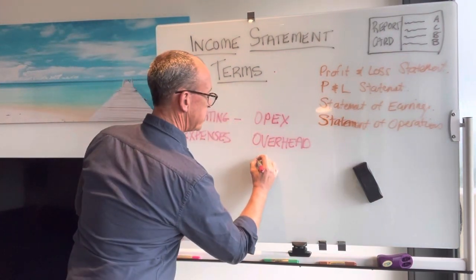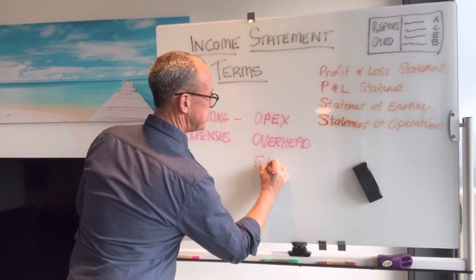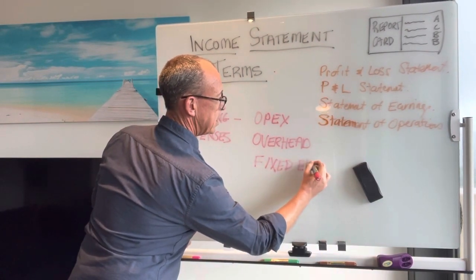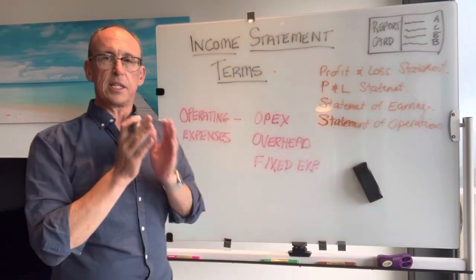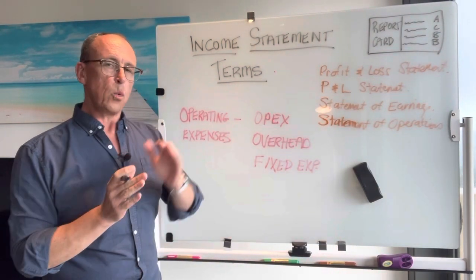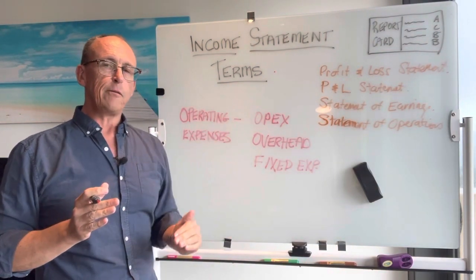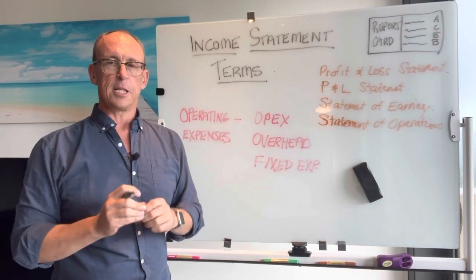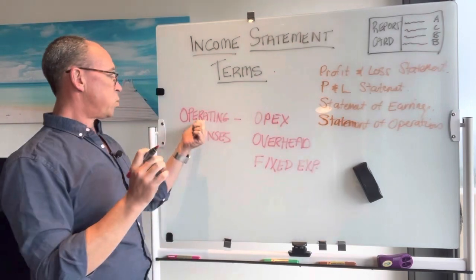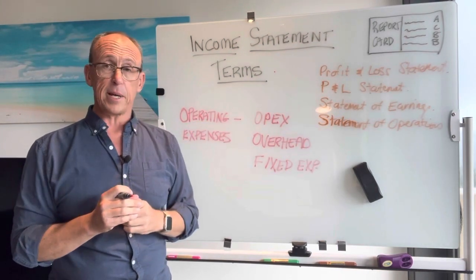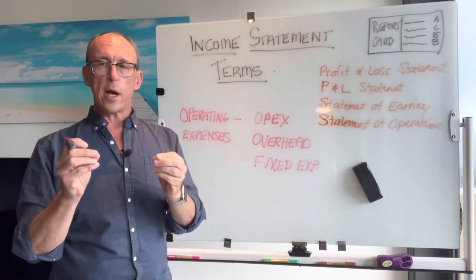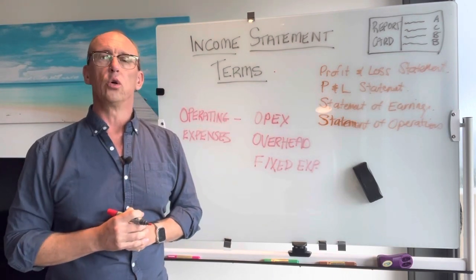The last term I want to talk about that we use sometimes is called fixed expense. All of these things are an expense, which means money goes out. It's a cost you get to operate your business, which is why it's called an operating expense.